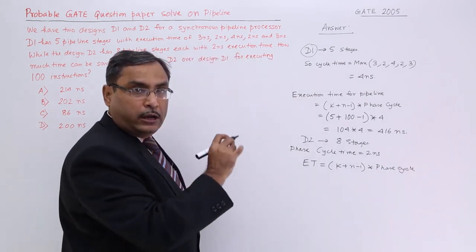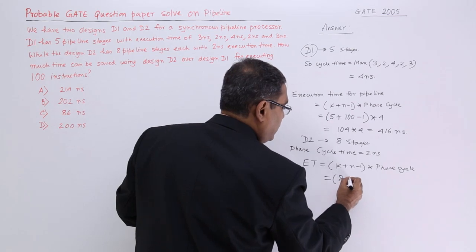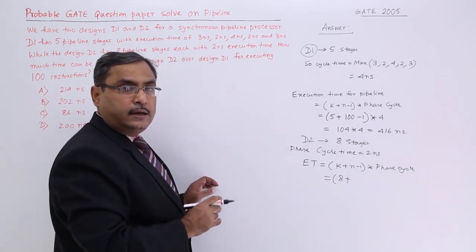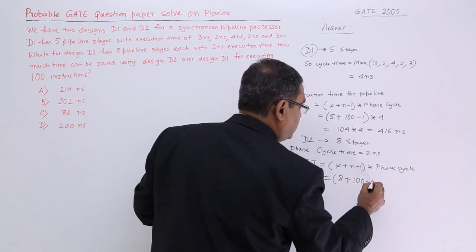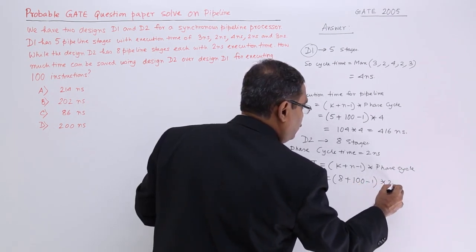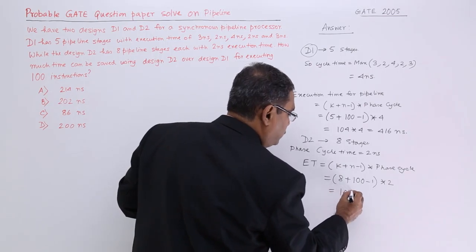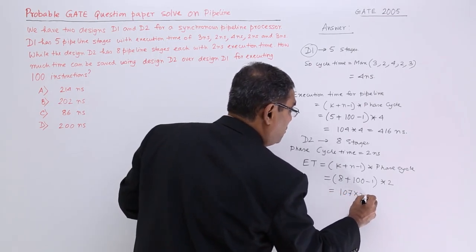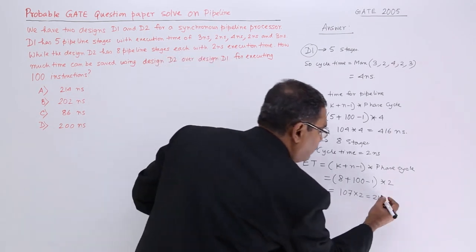Let me put my values here. Here K is equal to now number of stages. N is the number of instructions. I am putting here 100 minus 1 into 2. That should be the value. It is nothing but 107 into 2. We are getting 214. We are getting 214 nanosecond.